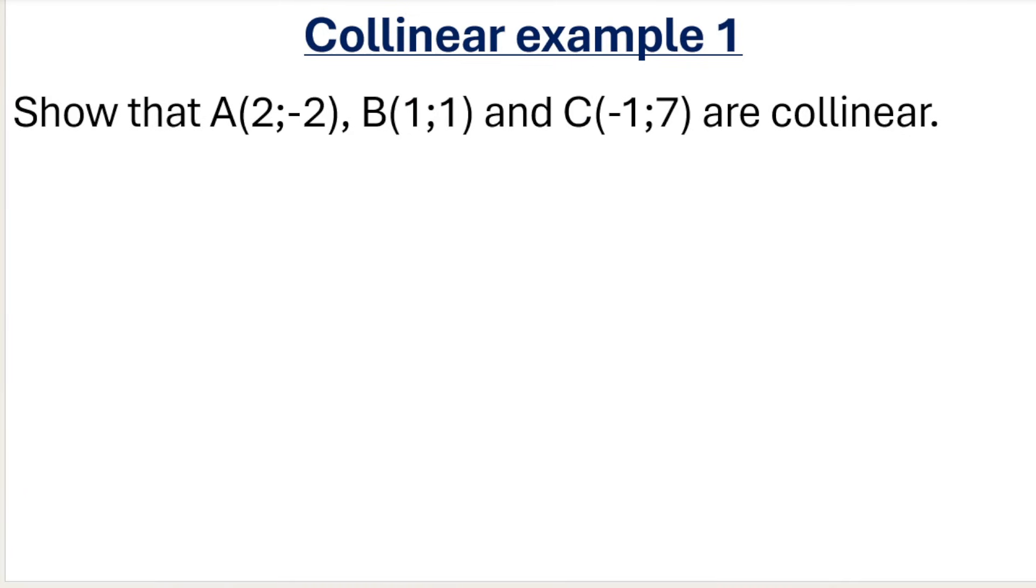If I get a question like this—show that A(2;-2), B(1;1) and C(-1;7) are collinear—what we have to do is show that if I calculate the gradient of, let's say, AB, that would be equal to the gradient of BC. Or I could do AC. To show they are collinear means they lie on the same straight line. If I pick any two and calculate the gradient—remember, to calculate gradient you need two coordinates.